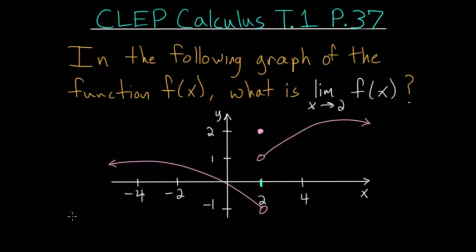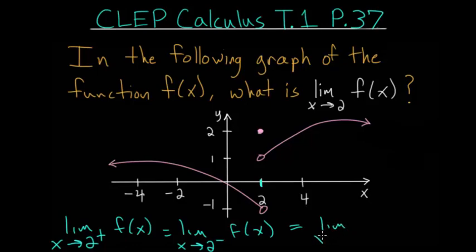we need to look at one condition. The limit as x approaches 2 from the right side or from the positive side has to equal the limit as x approaches 2 from the left side or the negative side. And if both of these values are the same value, then they both equal the limit as x approaches 2 of f(x).